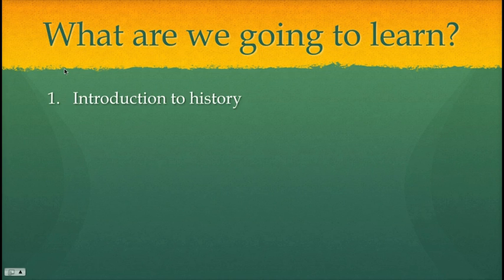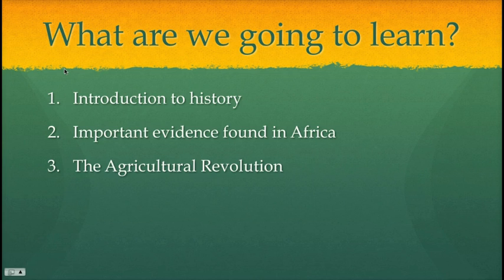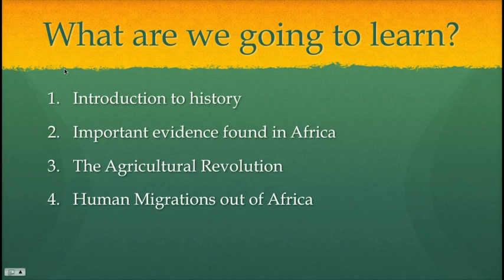What are we going to learn? We're going to talk about an introduction to history today — more specifically, how history is determined when you don't have any written records to rely on. We're going to talk about how paleontologists and anthropologists do their job to figure out what early humans were like. We'll talk about important evidence found in Africa that may link early humans to much older beings than originally thought. We'll talk about the agricultural revolution and what farming meant for early humans, because it really is a game changer. And then we'll talk about human migrations out of Africa, because the evidence says we started in Africa but didn't stay there — clearly, we've populated all corners of the globe.